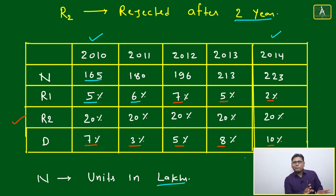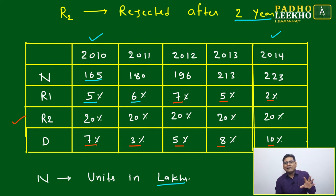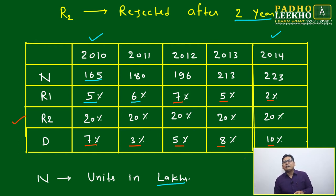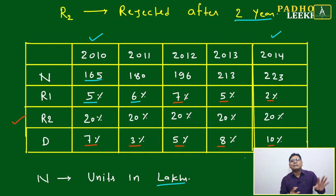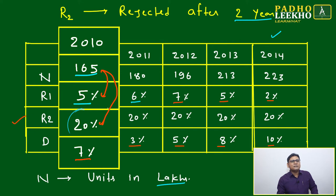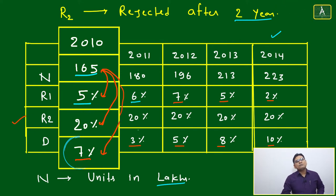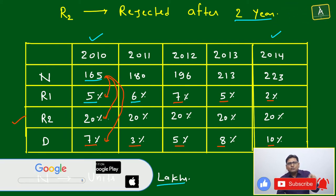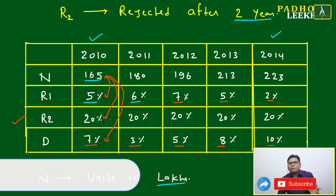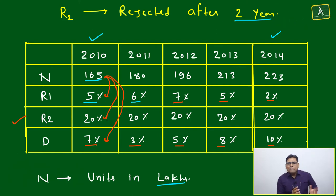Out of 25 data points: 5 are in absolute numbers and 15 are in percentage. All 15 percentage values depend on these 5 absolute numbers. For example, the 5% R1 of 2010 depends on 165 lakhs; the 20% R2 depends on 165 lakhs; the 7% damage also depends on 165 lakhs. Whatever units are produced, we apply three different percentages, and these percentages can be additive or subtractive.